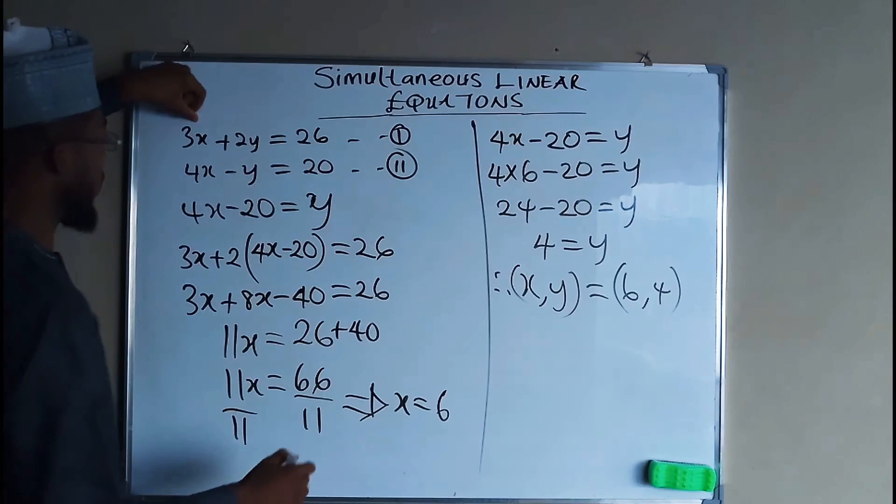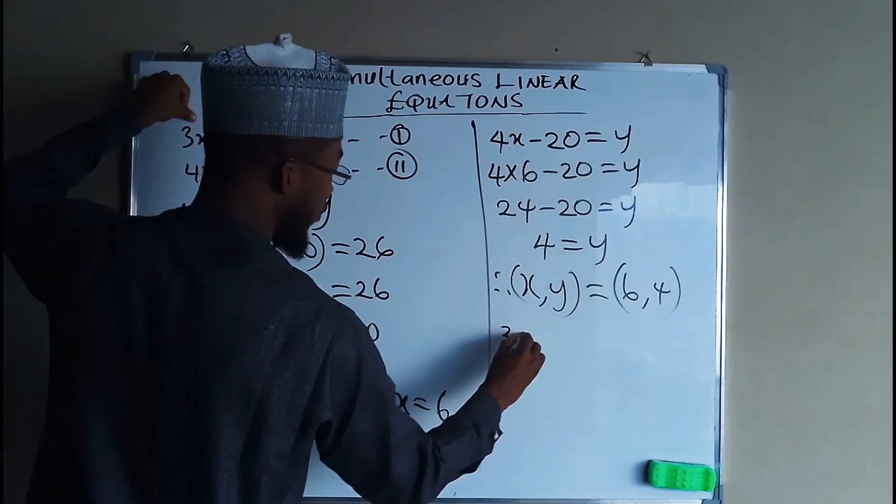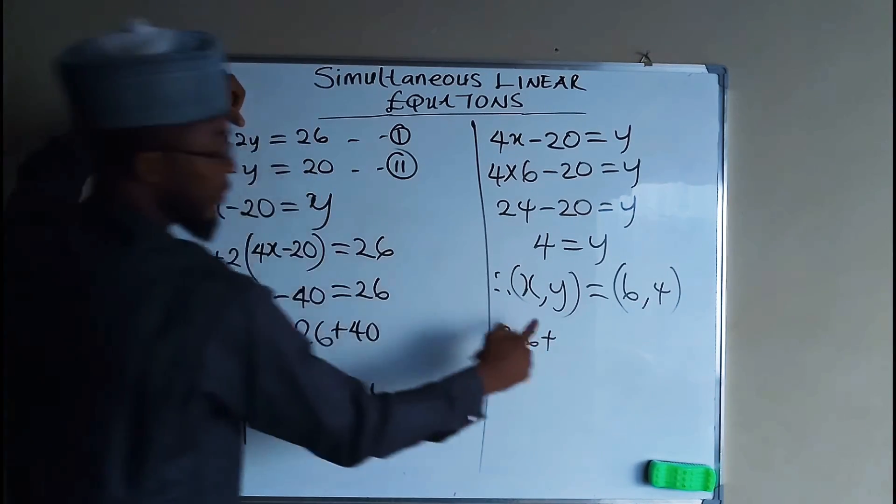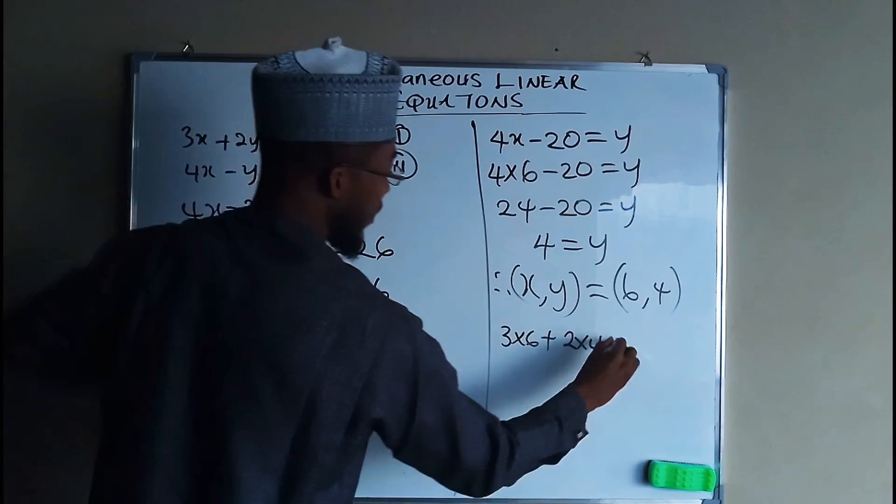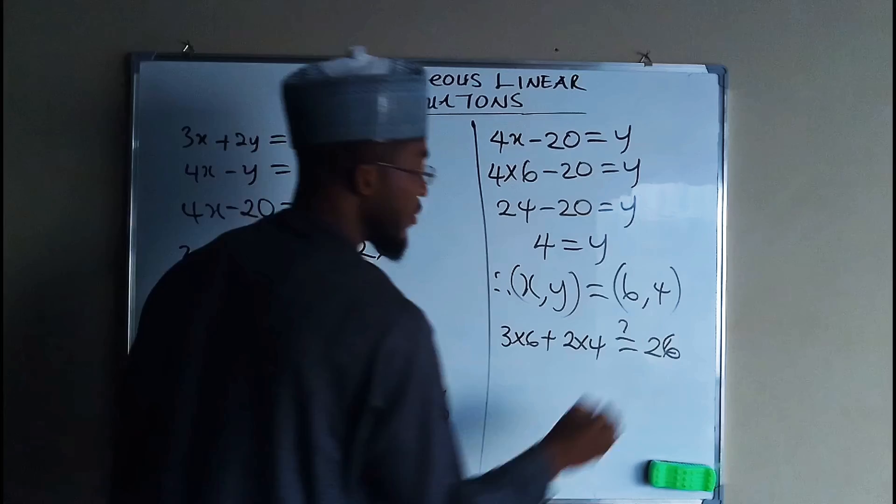Now for testing equation 1, when the value of x is equal to 6, we end up having 3 times 6 plus 2 times y, which is 2 times 4. Is it equal to 26? We need to ask ourselves.